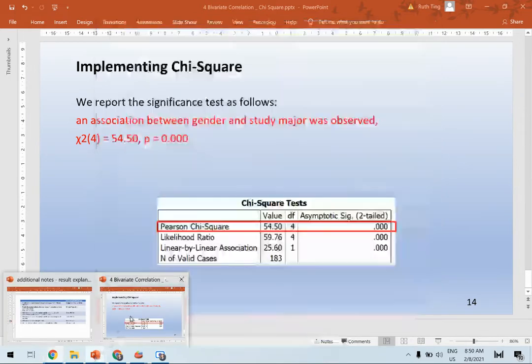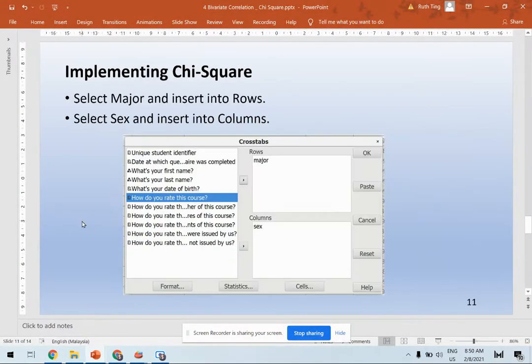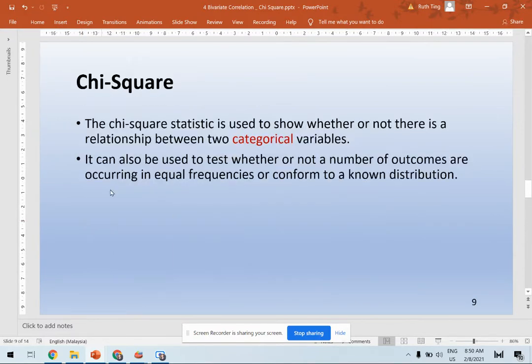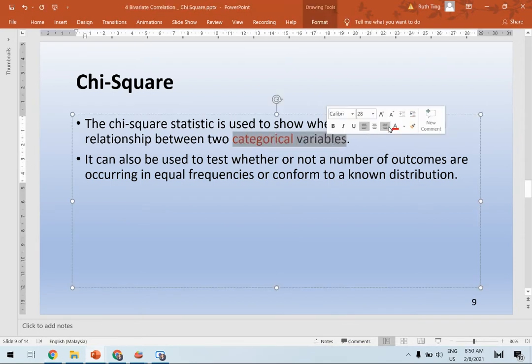Hi, today we are going to look at chi-square. What is chi-square? The chi-square statistic is used to show whether or not there is a relationship between two categorical variables.